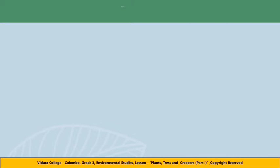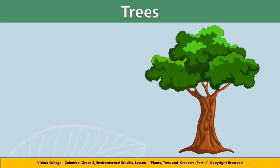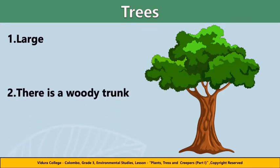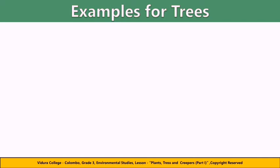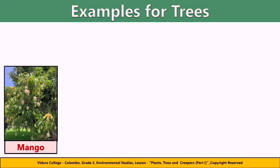First we are going to learn about trees. A tree is a tall and strong plant with a trunk and branches made of wood. It is large in size. Here are some examples for trees. Mango is a type of fruit. The mango tree is erect and branching with a thick trunk. The leaves of the tree are shiny and dark green.